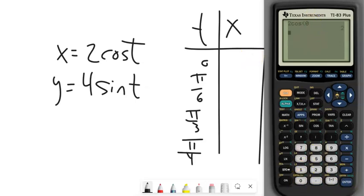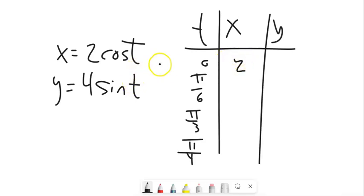Well, I know that cosine of 0 is 1, so that's going to be a 2. Sine of 0 is 0, so that's going to be a 0. And I could just keep plugging in my values here, and I could go to graph them all.